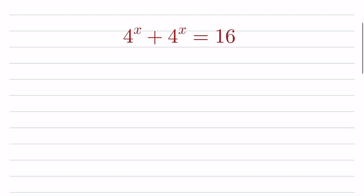4 to the power x plus 4 to the power x is equal to 16. Find the value of x. Here, 4 to the power x we can take common and write 1 plus 1 in the parenthesis, equal to 16.